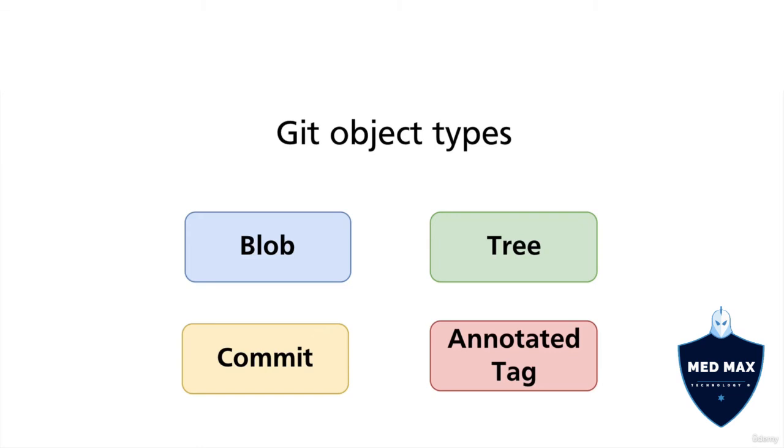That's our git object types. To summarize, blobs represent files and trees represent folders.